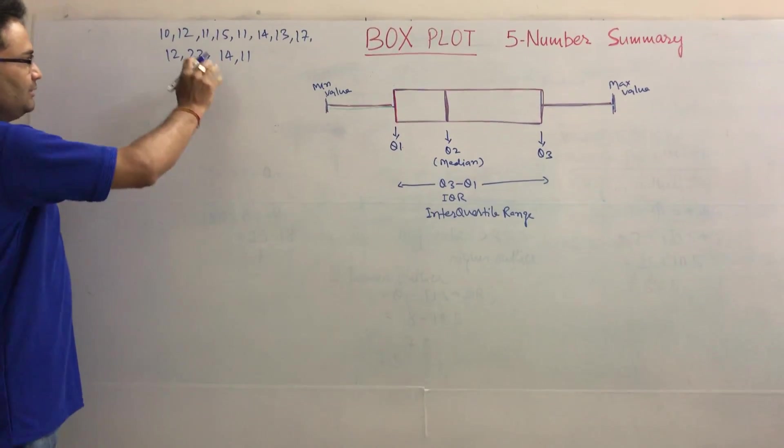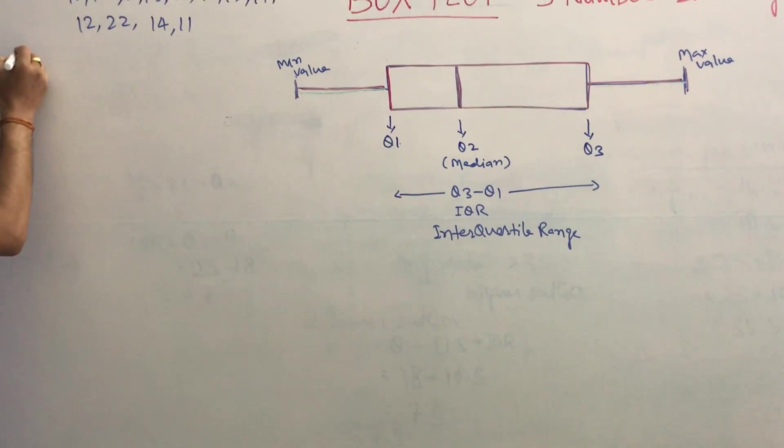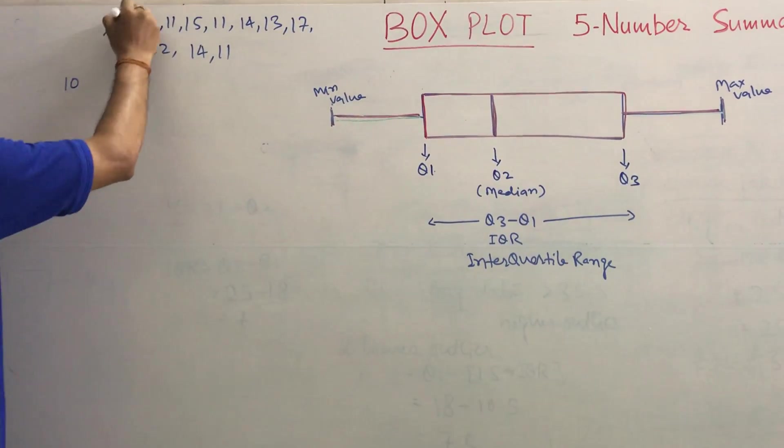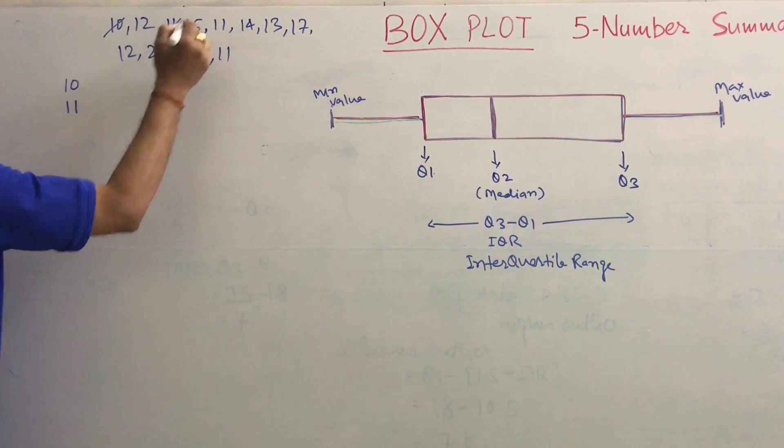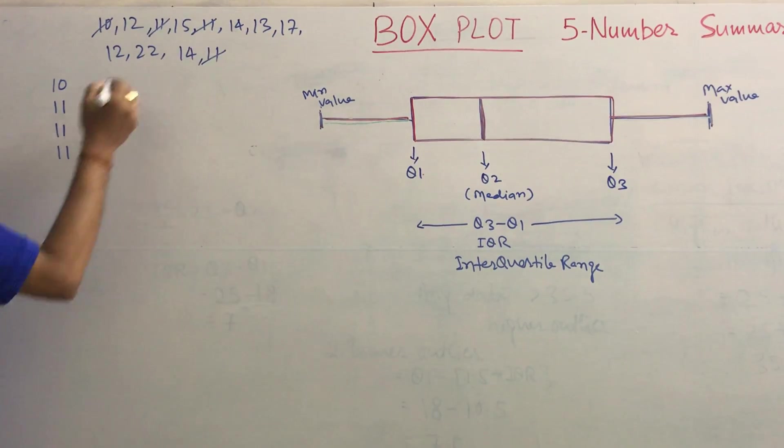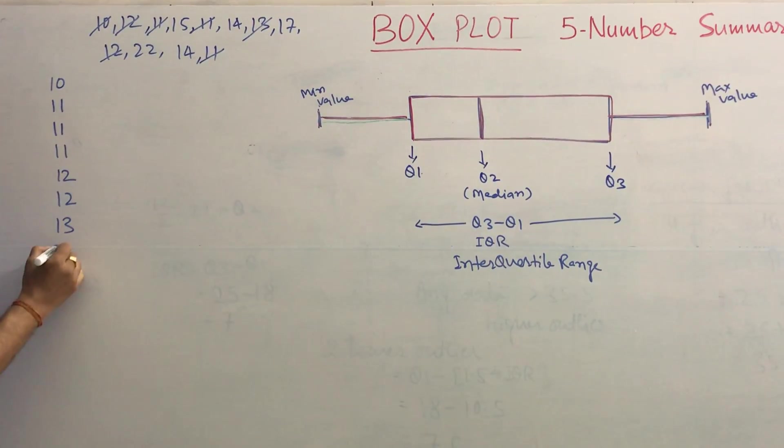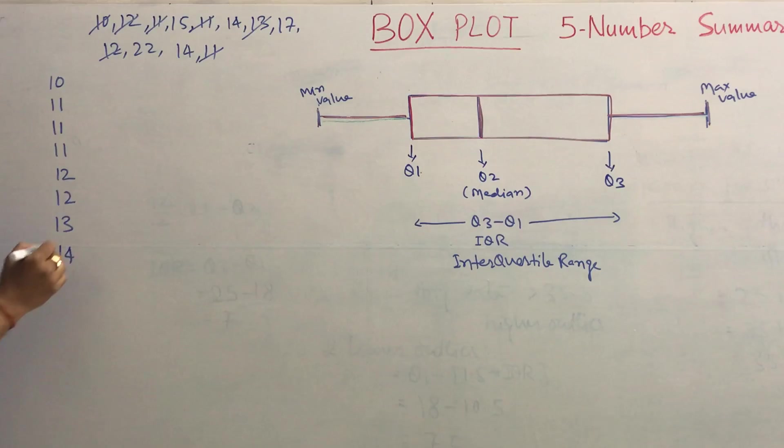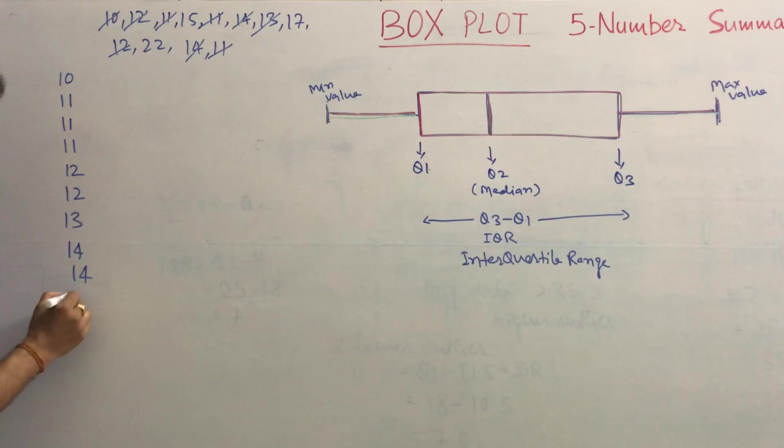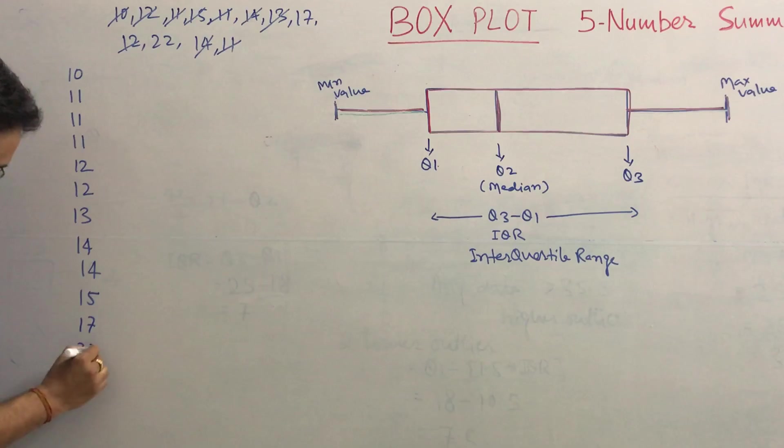Now see how to do that. If this data is given, first you have to sort this data in ascending order. If you do the sort, you take 10 (the lowest), then 11, another 11, then 12, two 12s, then 13.